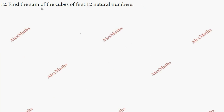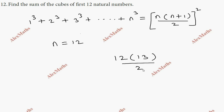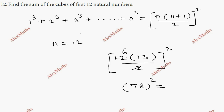Question number twelve: find the sum of cubes of the first 12 natural numbers. Using the formula 1³ + 2³ + 3³ + ... + n³ = [n(n+1)/2]². Substituting n = 12: S = [12 × 13/2]² = [78]² = 6084.